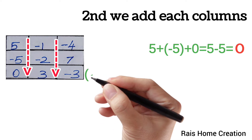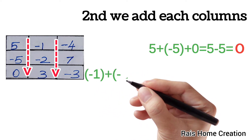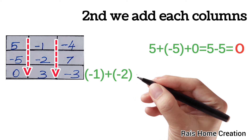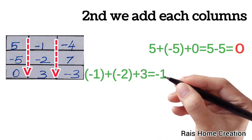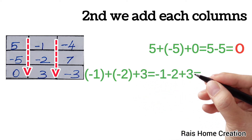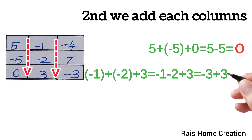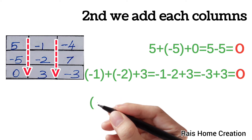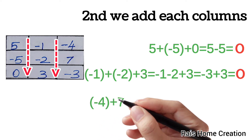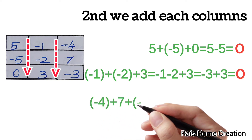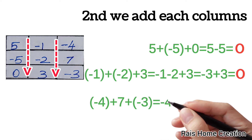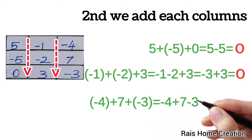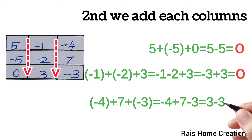Next, we will add minus 1 plus minus 2 plus 3 equal to minus 1 minus 2 plus 3 equal to minus 3 plus 3 equal to 0. Minus 4 plus 7 plus minus 3 equal to minus 4 plus 7 minus 3 equal to 3 minus 3 equal to 0.